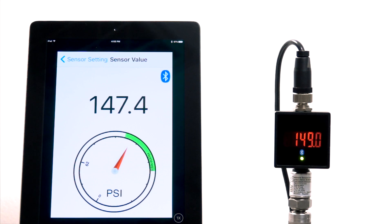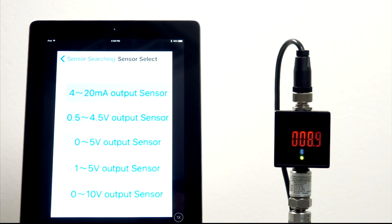The Sensor Meter's iOS-based app supports a wide range of sensor supplies and outputs including 4-20 milliamp and various other voltage output mode transducers.